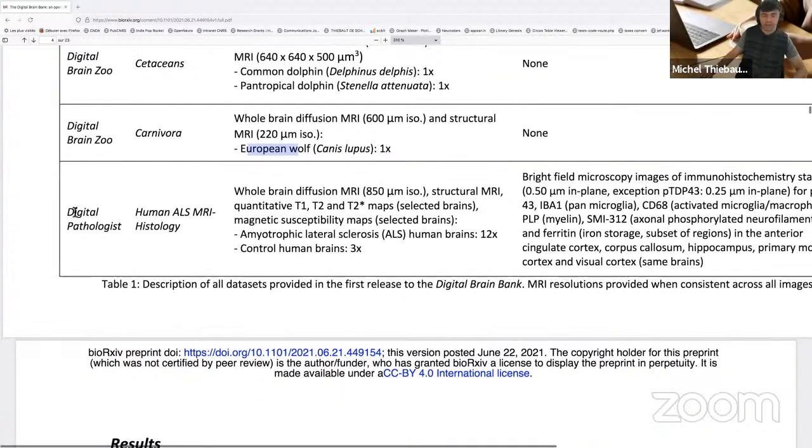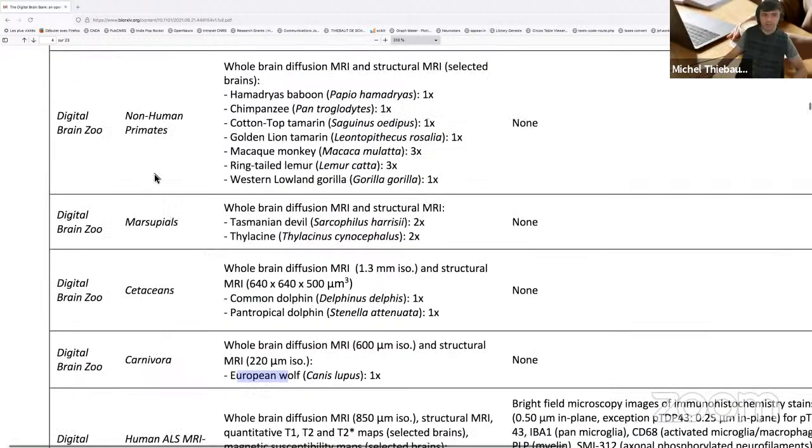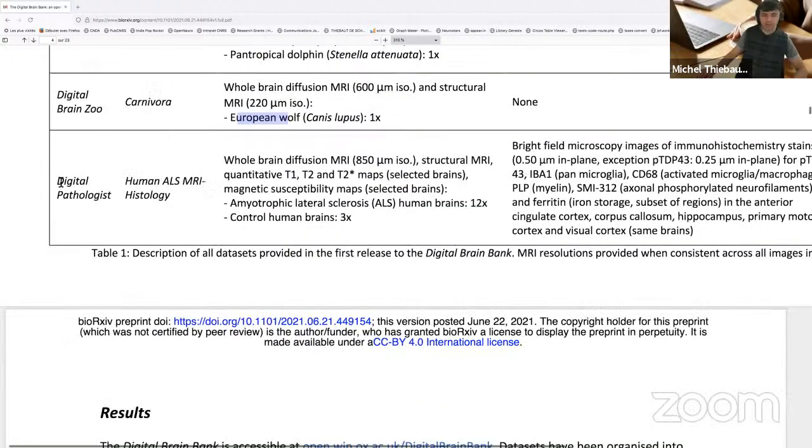You have a last part of this online database which is called the Digital Pathologies where they plan to upload high resolution imaging of brain with specific pathologies. They started here with amyotrophic lateral sclerosis post-mortem imaging where you have 12 human brains with this disease and you have three control brains with the same acquisition so you can make some comparisons. I assume that the control brains are matching age and education.